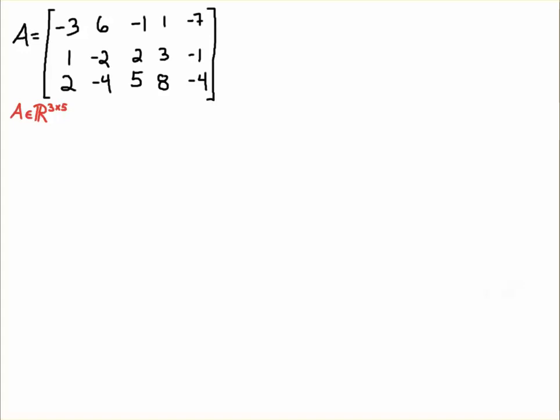Hello students. In this video, we're going to determine the row space and column space of a matrix, and in turn, we will also determine the row rank and column rank of this matrix and show that the row rank and column rank equal each other, and that gives us the rank of the matrix.